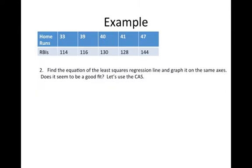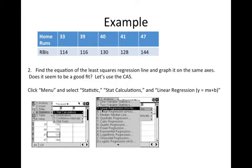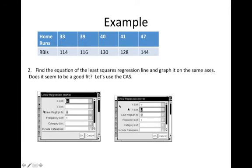We want to find the least squares regression line and graph it on the same axes. Does it seem to be a good fit? Let's use the CAS. You go back to the first page by clicking control and left arrow. And it will take you back to the first page. You want to go to menu, select statistics. You want to do a stat calculation and you want to do the linear regression line, the MX plus B line. Then you're going to get this menu here. For X list, you want to tab over here or click over here on the right arrow and it will have X and Y. So pick X for Y list. Do the same thing, but pick Y. And you can save the regression function to whichever function you want to save it to: F1, F2, it doesn't matter. Then you're going to want to press OK.